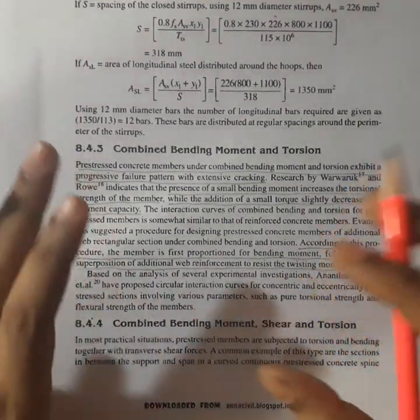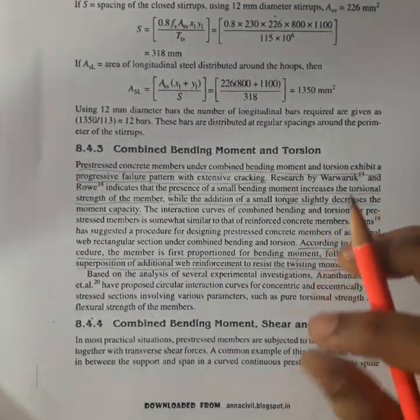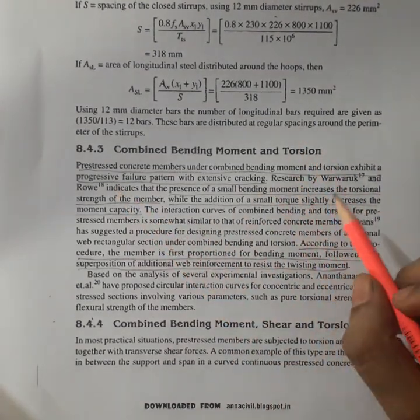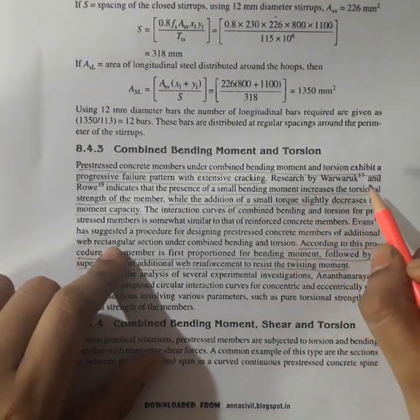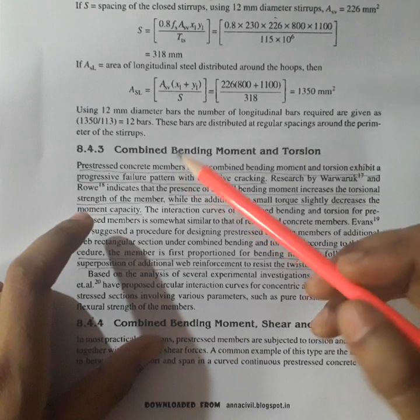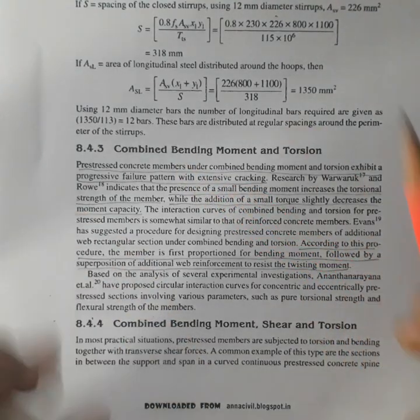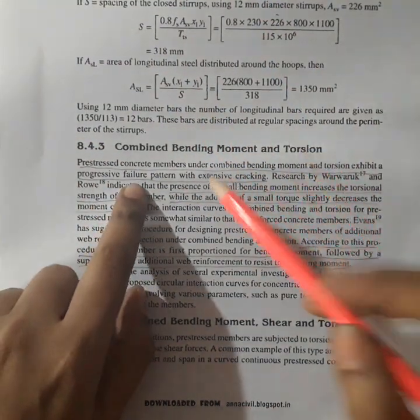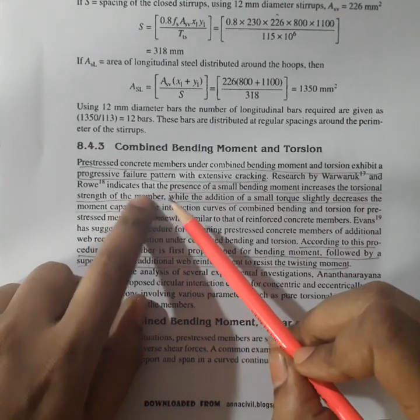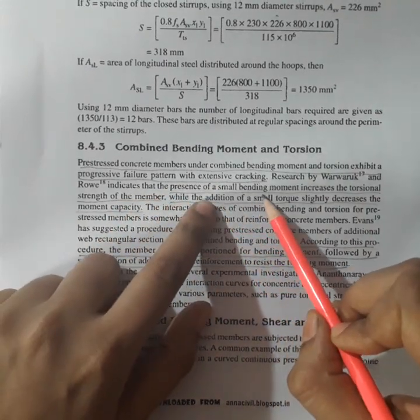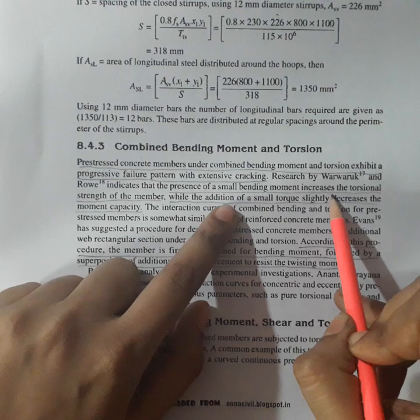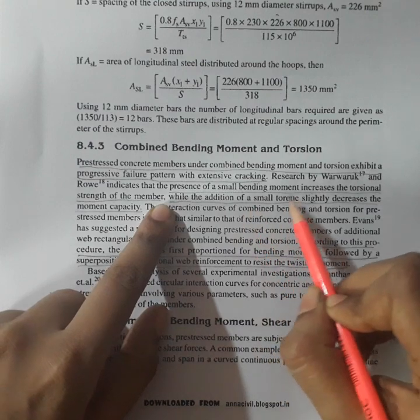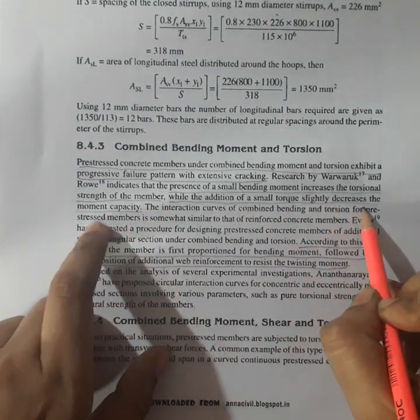There are some notions which we should study before going to the design problem. Research by Warwaruk and Rowe said that prestressed concrete members under combined bending moment and torsion exhibit a progressive failure pattern with extensive cracking, which indicates that the presence of small bending moment increases the torsional strength of a member while the addition of small torque slightly decreases the moment capacity.